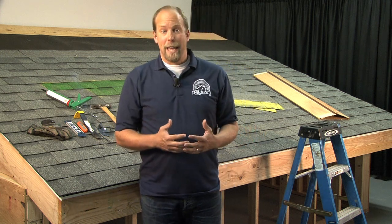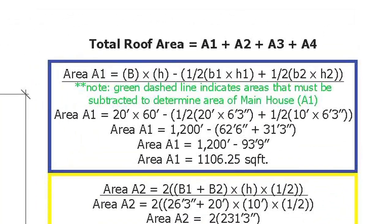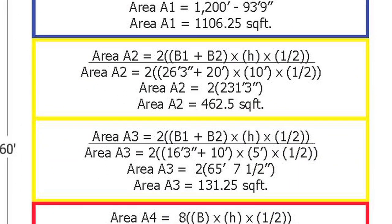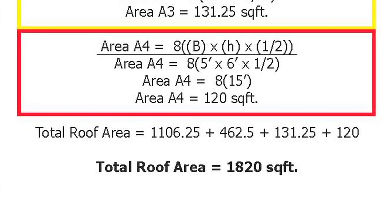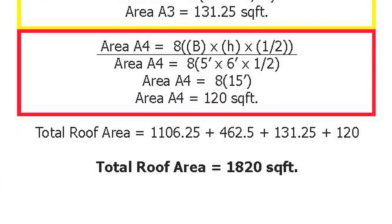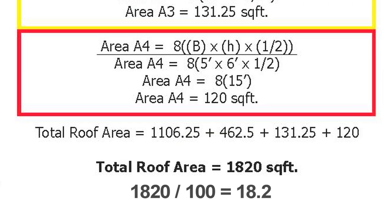Here's the breakdown of all the shapes and their areas. When you add up all the shapes, the total roof area is one thousand eight hundred and twenty square feet. Now convert the total square footage to roofing squares. In roofing terminology, a square is one hundred square feet. Divide the total area by one hundred: one thousand eight hundred and twenty square feet divided by one hundred equals eighteen point two squares.